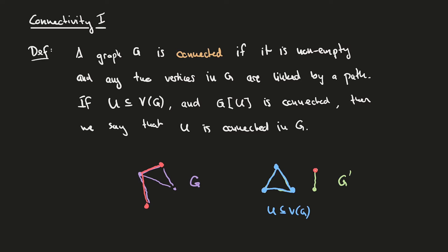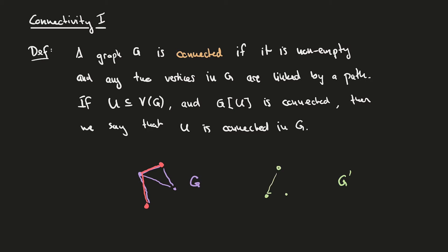Thus, being connected in a graph, if we're talking about a set of vertices, is relative to the graph. On the other hand, if we choose this set of orange vertices as a subset U prime of the vertex set of G, then the graph induced by these orange vertices is this edge together with the other vertex of the triangle, and this set would not be connected in G prime.